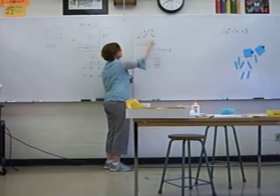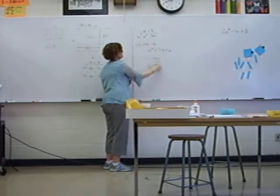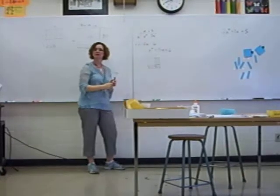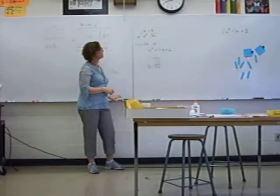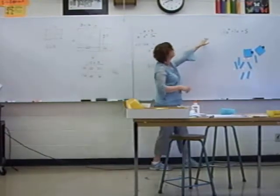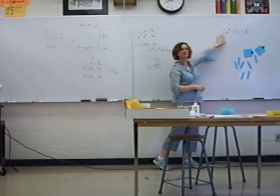There's the x squared. There's the 3x's. There's the 2x's. And there's the 6. Okay? So what we're going to do right now is try to factor 2x squared plus 7x plus 5.